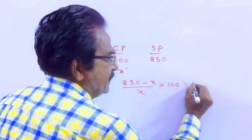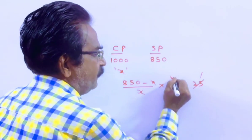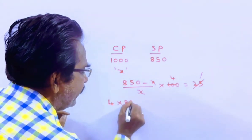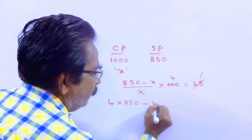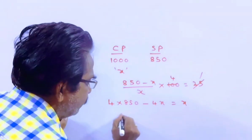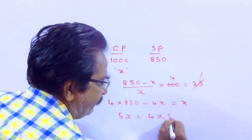The profit percent is given as 25%, which is 1/4. So 4 into 850 minus 4X equals X. This implies 5X equals 4 into 850, friends.